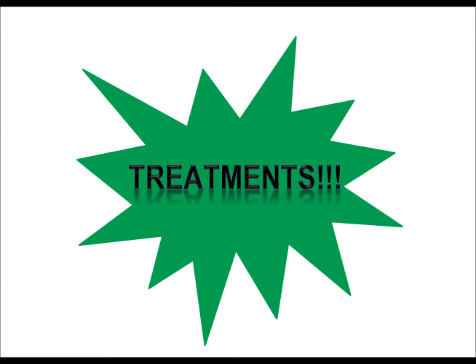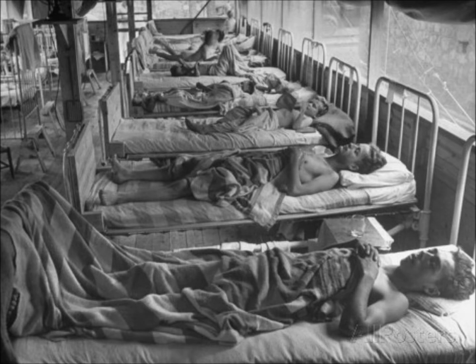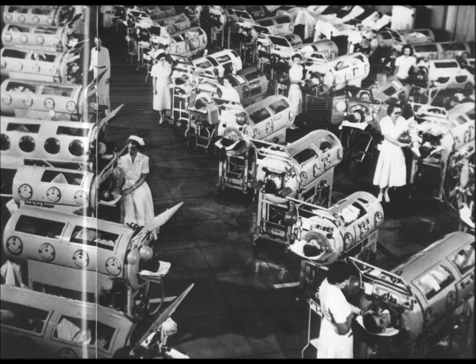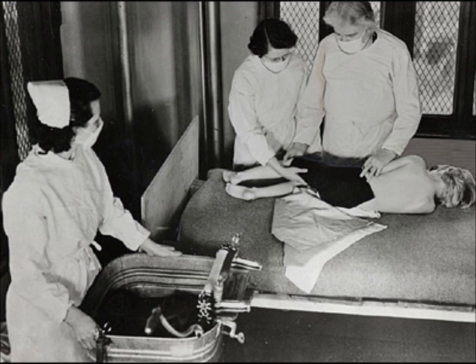Now we are going to discuss treatments, both unsuccessful and successful. In 1916, which was the first epidemic in the United States, attempts at controlling the disease largely involved the use of isolation and quarantine, both of which were unsuccessful. In 1928, Philip Drinker and Louis Shaw developed the Iron Lung, a large metal tank equipped with a pump that assists respiration. The Iron Lung went into commercial production in 1931.